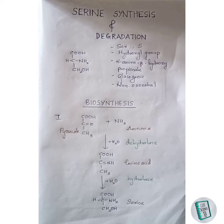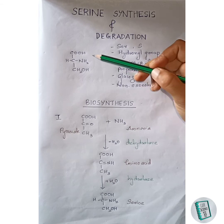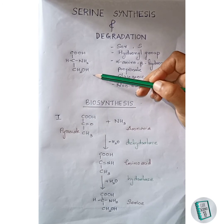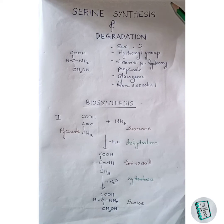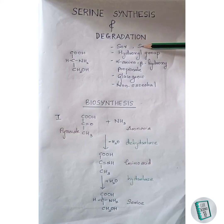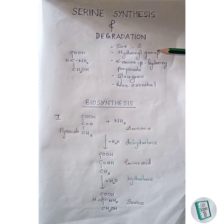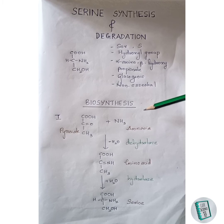Hello guys, welcome back to the channel. Today we will be discussing the synthesis and degradation of serine. This is the structure of serine — it has a hydroxyl group in its structure. The three-letter representation of this amino acid is Ser, and the single-letter representation is capital S. Its other name is alpha-amino-beta-hydroxy propionate. It is a glucogenic amino acid and also a non-essential amino acid.